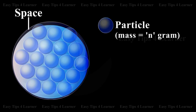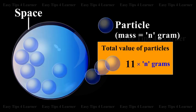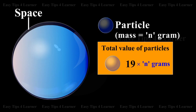Particle. When a number of particles are present in a given region of space, their total value is equal to their sum. That is, it is neither less nor more.